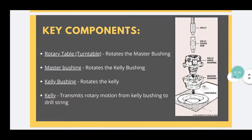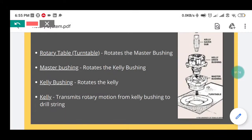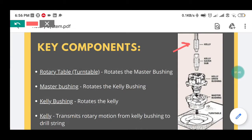Here you can see a few components. Our rotary motion commences from the rotary table, also known as a turntable. The rotary table has a hollow space where the master bushing fits. In the master bushing there is a hollow space where the Kelly bushing fits, and in the Kelly bushing there is a hollow space where the Kelly fits. So if rotary motion commences from the rotary table, it transmits to the master bushing, master bushing transmits to the Kelly bushing, and Kelly bushing transmits to the Kelly.